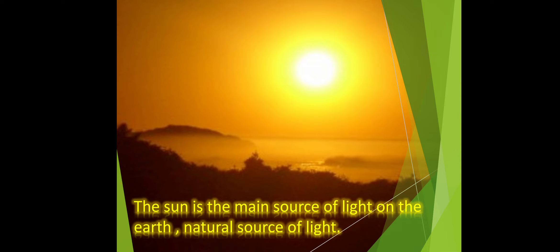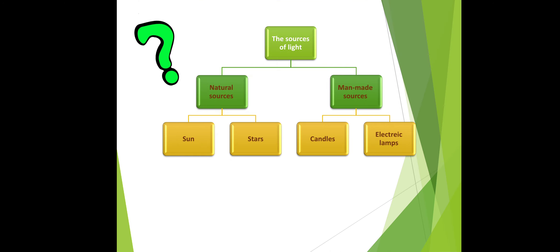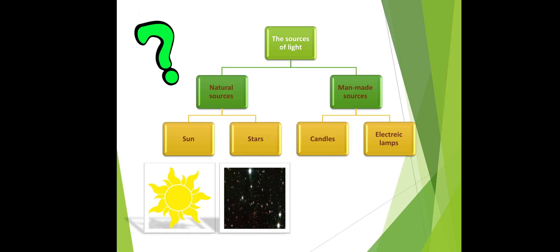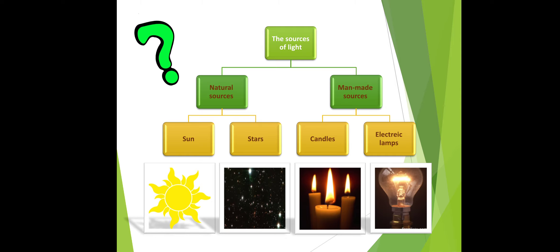The Sun is also a natural source of light. Sources of light are divided into two groups: natural and man-made. Natural sources include the Sun and stars. Man-made sources include candles, electric lamps, and kerosene lamps.